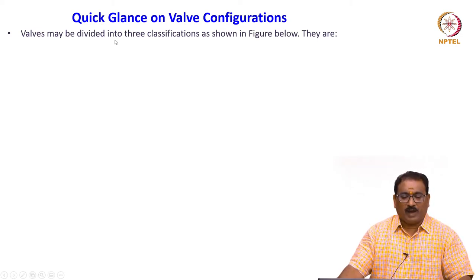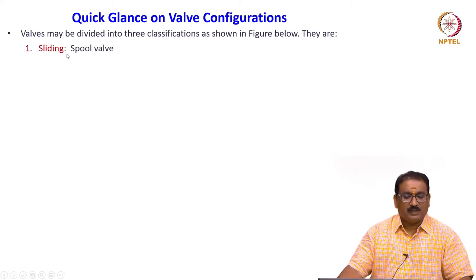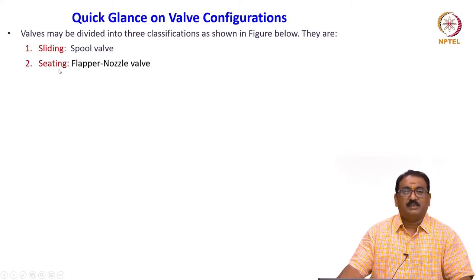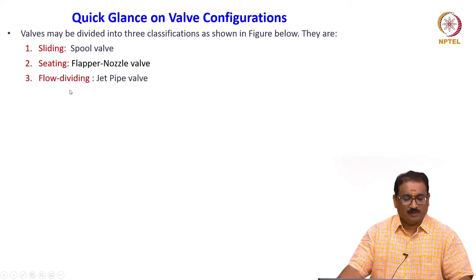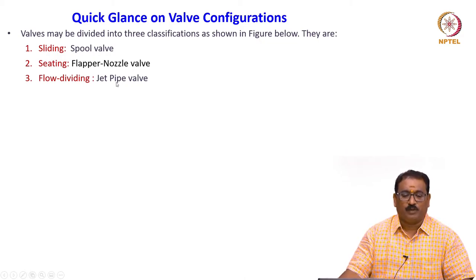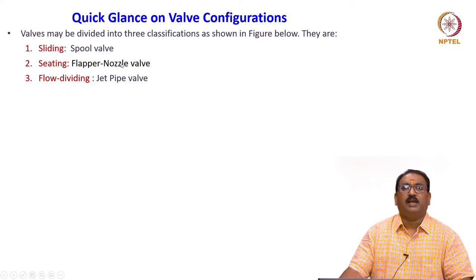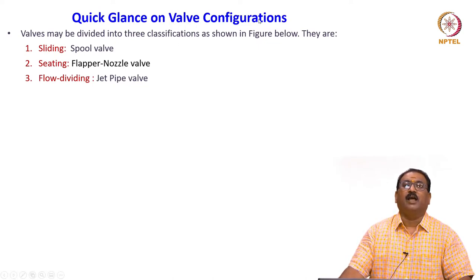Valves may be divided into three classifications: sliding type — where spool valves come into picture; seating type — where the flapper nozzle valve comes into picture; and flow-dividing type — where the jet pipe servo valve comes into picture. We will discuss these in the next class, but to understand critical center valves, closed center valves, and open center valves, it is very important to know the valve configuration in the null position.